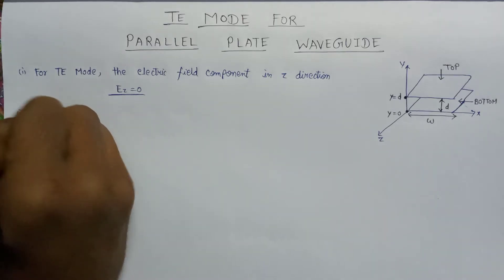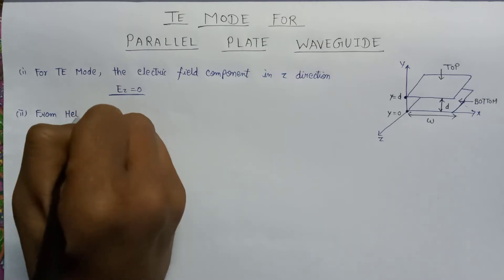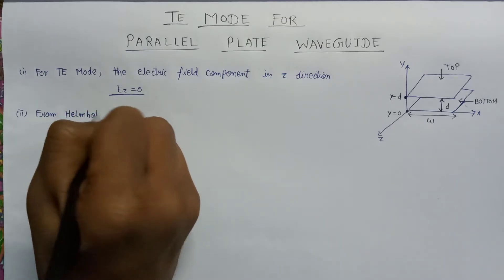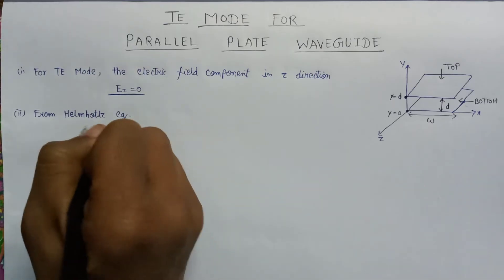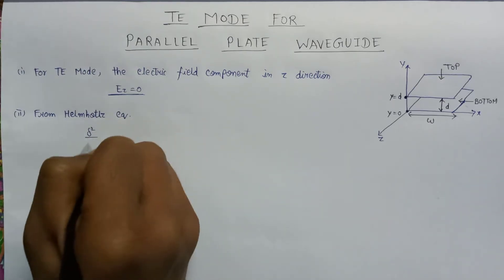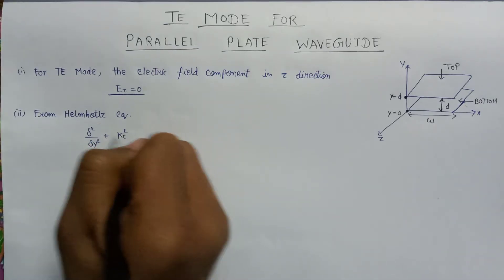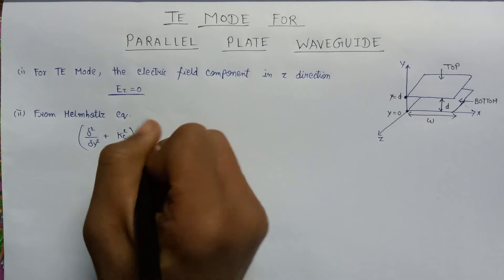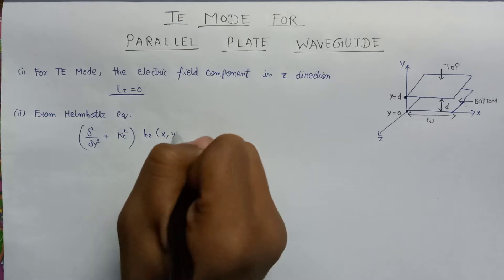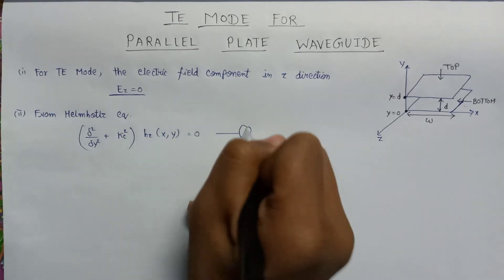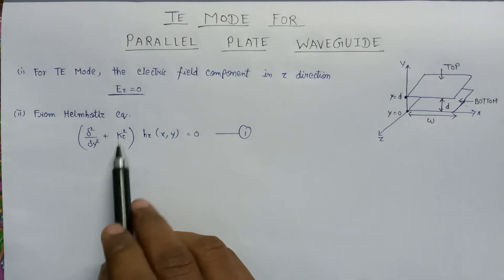Now let us have a look at the Helmholtz equation representation for TE mode. From the Helmholtz equation, the governing equation is: d²/dy² plus Kc² multiplied with the magnetic field component in the z-direction is equal to zero. This is equation number 1 — the Helmholtz equation for TE mode.